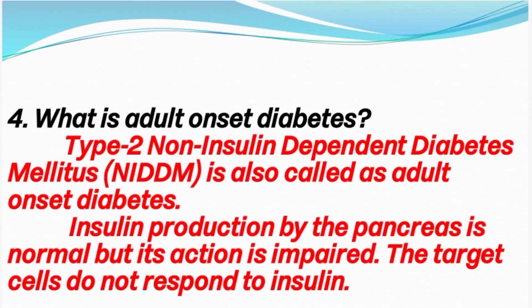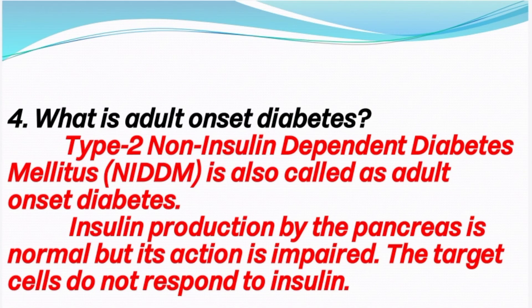Fourth question: What is adult onset diabetes? Diabetes mellitus is divided into two types. Type 1 is also known as juvenile onset diabetes. Type 2 is adult onset diabetes. In adult onset diabetes, insulin production by the pancreas is normal but its action is impaired, so the target cells do not respond to insulin.